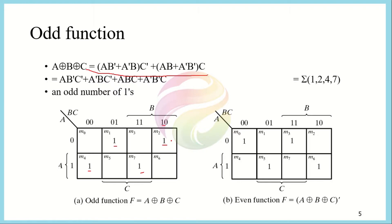The odd function means that at least one variable must be equal to one, or all three variables are one — in other words, the total number of ones in the input must be odd. This is actually the more precise definition of the exclusive OR operation. While for two variables we say exclusive OR gives a one when inputs are different, the actual definition is that exclusive OR gives a one when there are an odd number of ones in the input. That is why the exclusive OR operation is also known as the odd function.